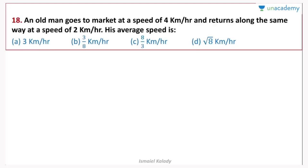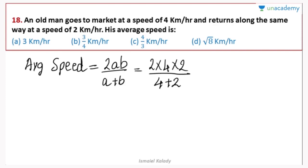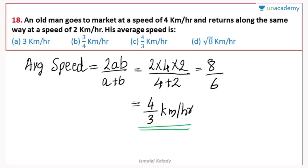An old man goes to market at a speed of 4 kmph and returns along the same way at a speed of 2 kmph. His average speed is found using the formula: average speed equals 2ab divided by (a plus b). Substituting: 2 times 4 times 2 divided by (4 plus 2) equals 16 divided by 6 equals 8/3 kmph. That is the right answer.